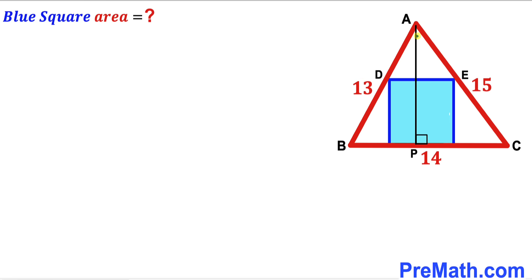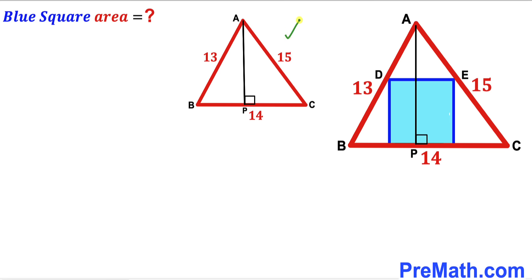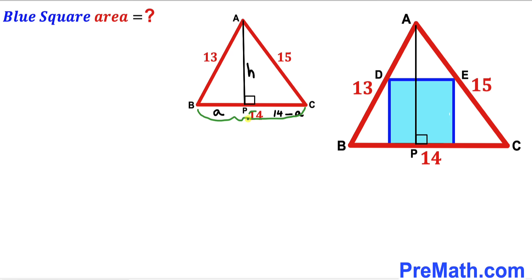In this next step I have dropped the perpendicular AP onto side BC. Our task is to calculate this perpendicular length AP before we calculate the area of the blue shaded square. We consider triangle ABC without the blue square, where AP is the perpendicular, which I'll label as height H. I'll label the segment BP as lowercase a, so segment PC is going to be 14 minus a, since the whole side BC is 14 units.